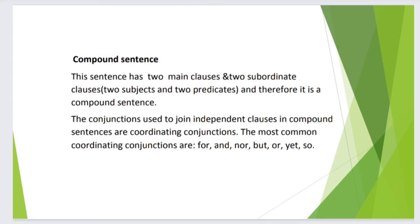Compound sentence: this sentence has two main clauses and two subordinate clauses, two subjects and two predicates, and therefore it is a compound sentence. The conjunctions used to join independent clauses in compound sentences are coordinating conjunctions. The most common coordinating conjunctions are: for, and, nor, but, or, yet, so.